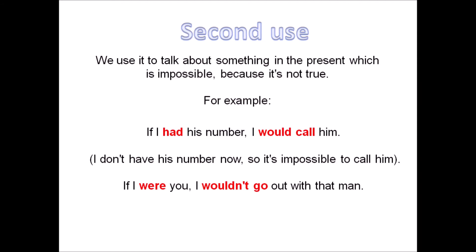She would pass the exam if she had studied. And we have the second use of the second conditional. We use it to talk about something in the present which is impossible because it's not true. For example, if I had his number, I would call him. I don't have his number now. So it's impossible to call him. If I were you, I wouldn't go out with that man. So bro, if I were you, I wouldn't go out with that girl. She's not fine for you, dude. I can say it in that way because I'm not my friend. So it's impossible for being your best friend. You can love him, you can like him, but you are not him. You are you.